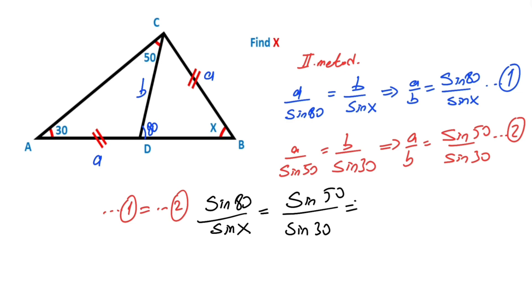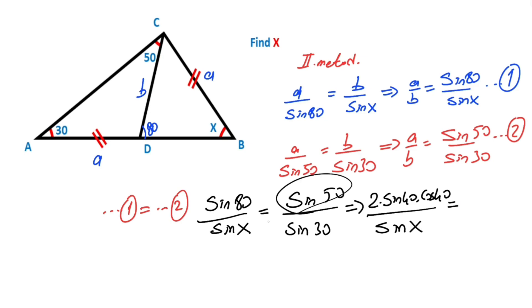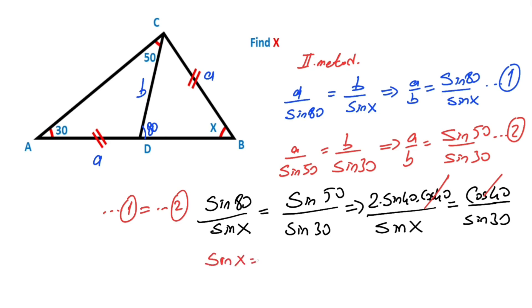We know that the expansion of sine 80 equals two times sine 40 times cosine 40. So A over sine x, and we can substitute. After simplifying the expansion, sine x equals two times sine 40 times sine 30. Since sine 30 equals 1 over 2, this gives sine x equals sine 40, so x equals 40 degrees.